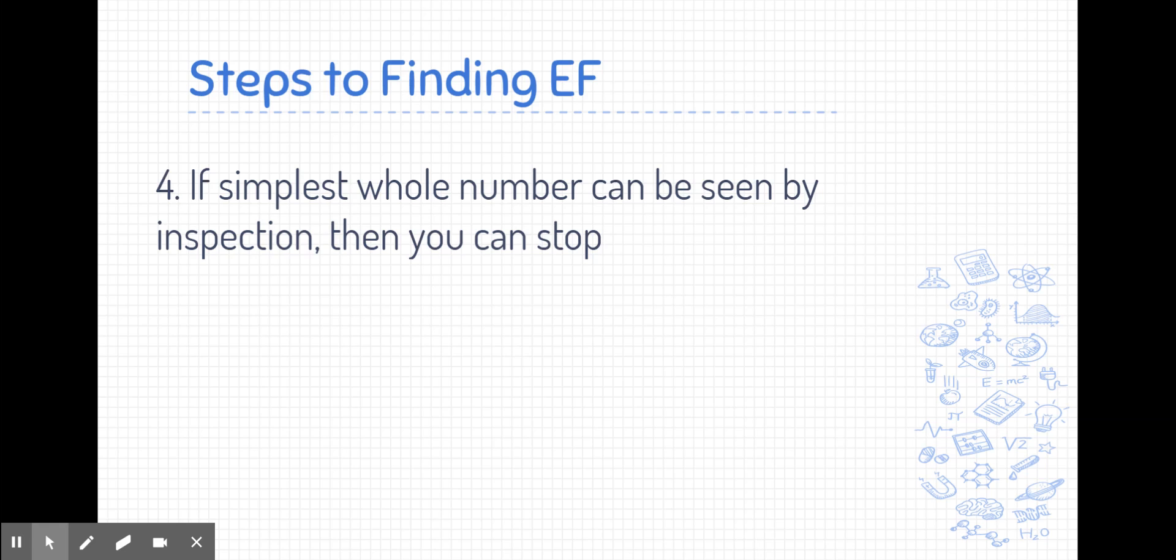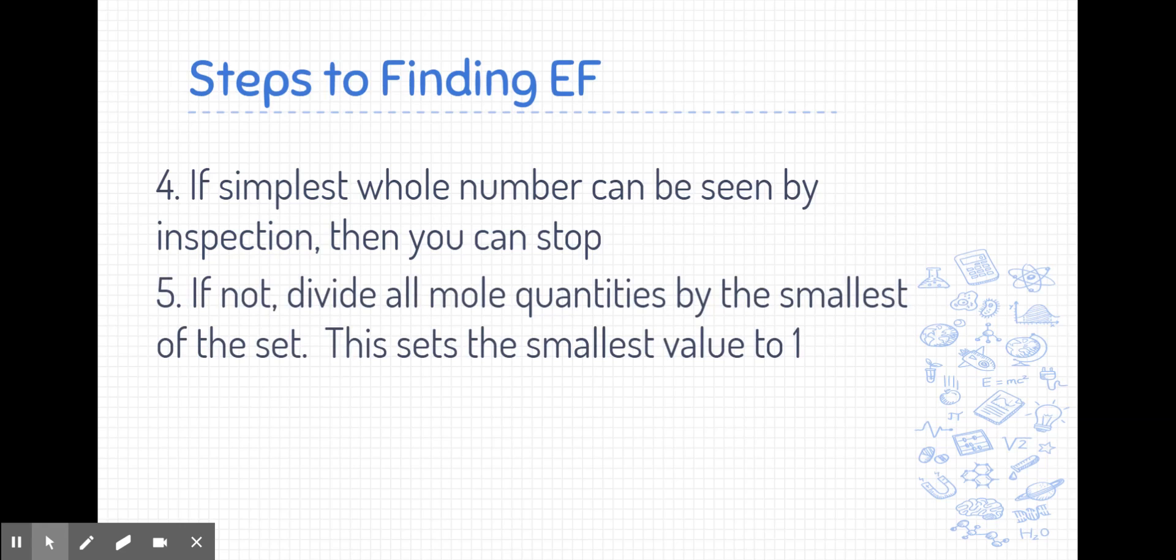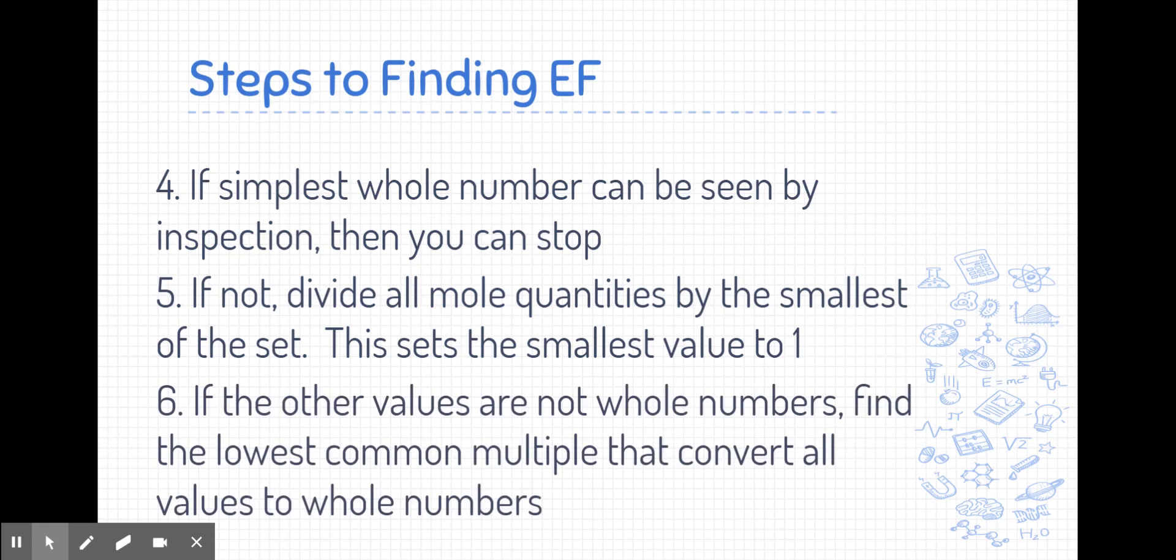If you cannot determine the simplest whole number ratio, we divided all mole quantities by the smallest of the set. In this set, the smallest value to 1. This will ensure that whatever mole ratio we get will likely be the smallest value. If the other values are not yet whole numbers, then we're going to find the lowest common multiple and convert all of those values into whole numbers.